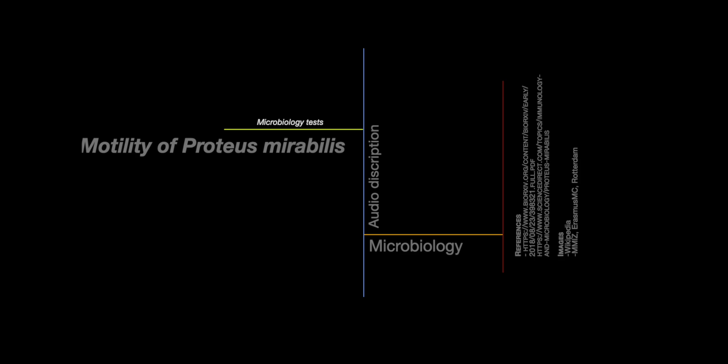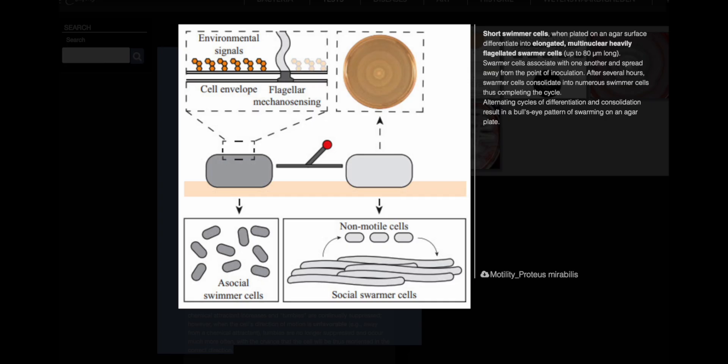Proteus mirabilis exhibits swarming motility, which is a rapid 2 to 10 per second and coordinated movement of a bacterial population across solid or semi-solid surfaces. This behavior is an example of bacterial multicellularity and swarm behavior.